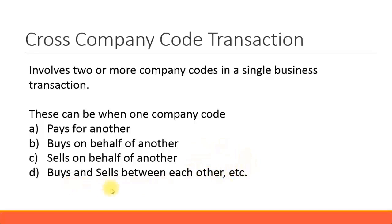Buying and selling between each other also qualifies — if one company code sells to another company code, it's considered a cross-company code transaction. This must all be within the same group organization, or between organizational entities, subsidiary companies, sister companies, or parent and child companies.